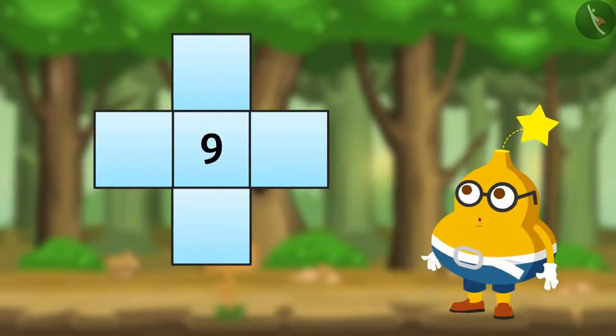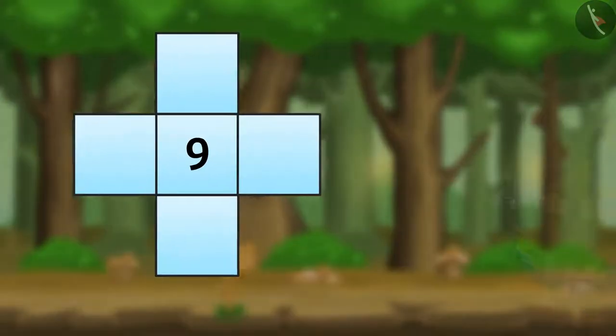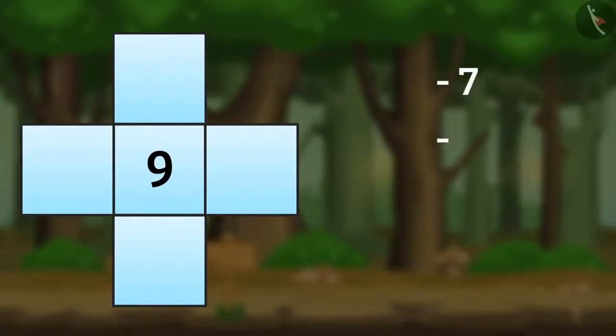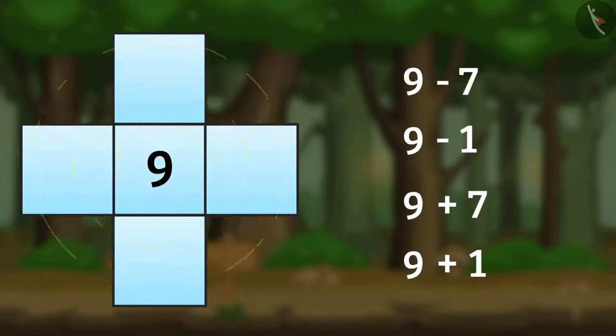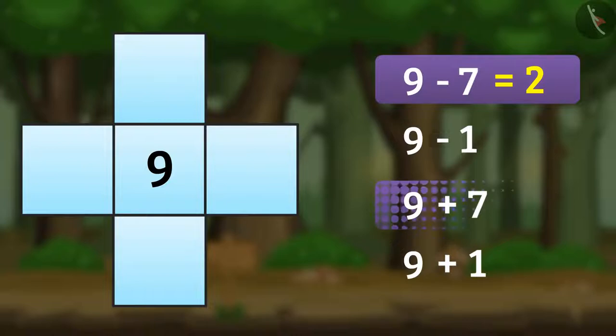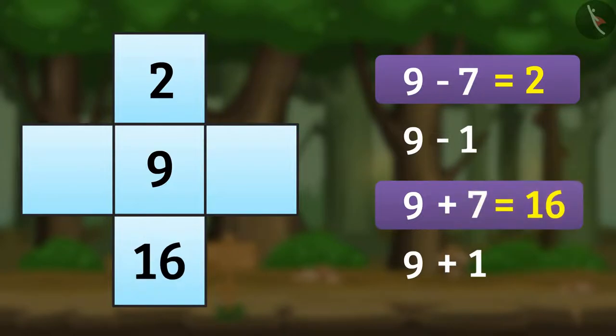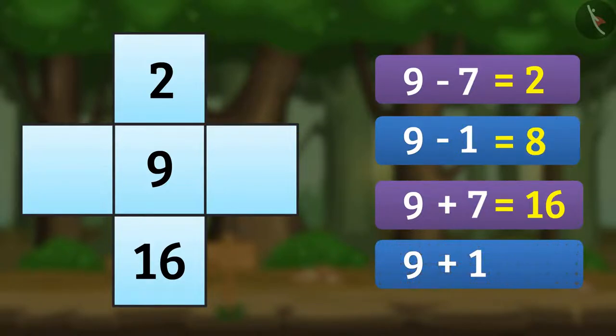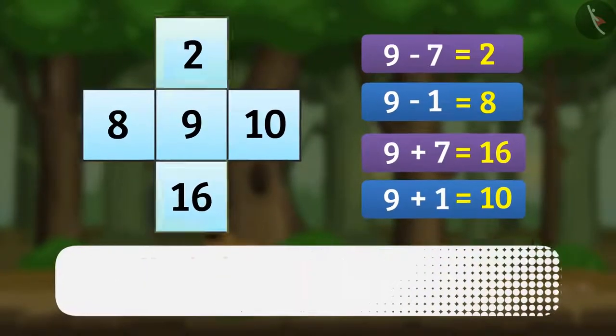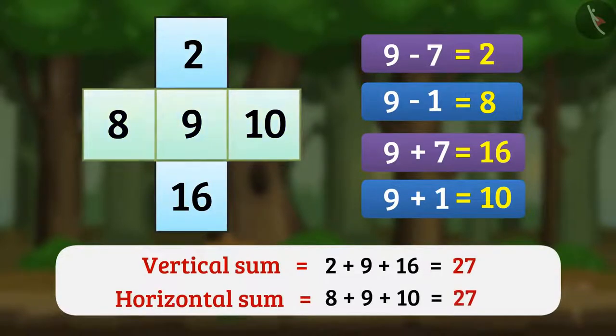So, we can solve this puzzle by subtracting 7 and 1 from 9 and adding 7 and 1 to 9. By subtracting 7 from 9 and by adding 7 to 9, we can fill the vertical cells like this. In the same way, by subtracting 1 from 9 and by adding 1 to 9, we can fill the horizontal cells like this. Now, you can see the vertical sum and the horizontal sum is 27.